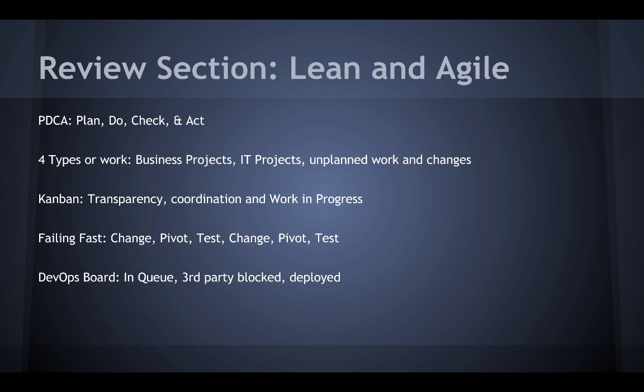Use Kanban and the four types of work — business projects, IT projects, unplanned work, and changes — to see work in progress in your organization and learn how to prioritize across the four types of work by using the percentage system outlined in this section. Start out using Kanban with the ops board designed by adding the following columns: the queue, the third-party blocked, and deploy column, along with the production fire swim lane.